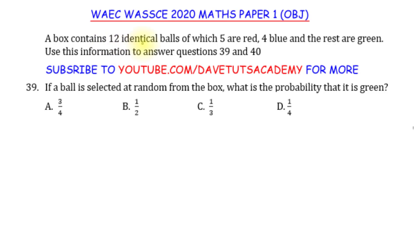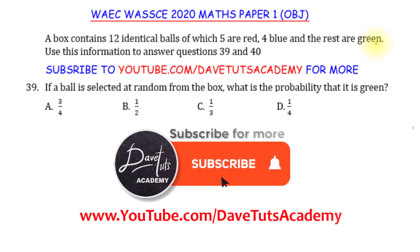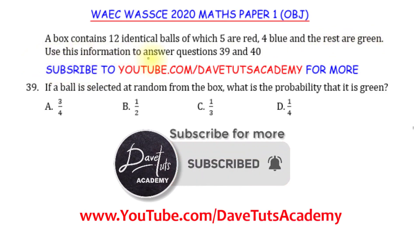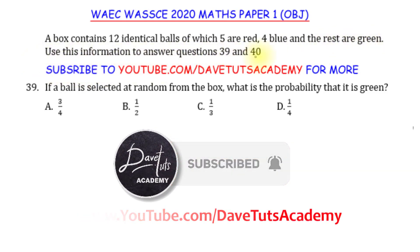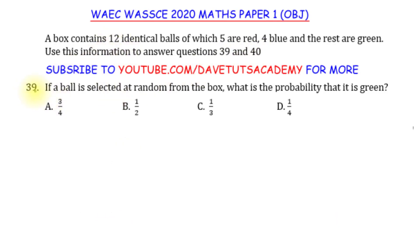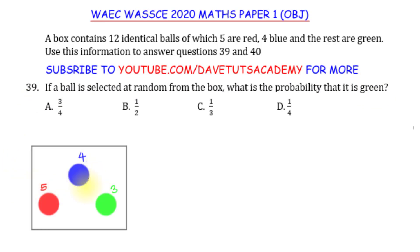A box contains 12 identical balls, of which 5 are red, 4 are blue, and the rest are green. We are to use this information to answer questions 39 and 40. In question 39, if a ball is selected at random from the box, what is the probability that it is green? We can see in the diagram there are 5 red balls, 4 blue ones — 5 and 4 constitutes 9.